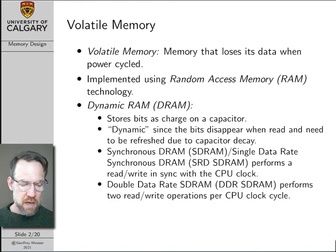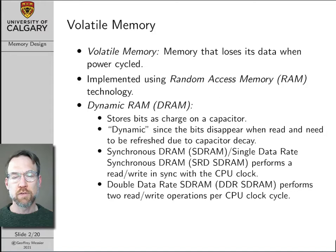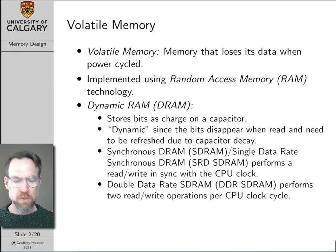Double data rate SDRAM — DDR SDRAM for short — performs two read and write operations per CPU clock cycle. As of the time of recording this video, if you go to a computer store and buy RAM for your computer, it will be some generation of DDR SDRAM.